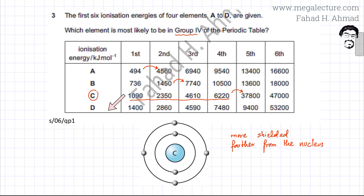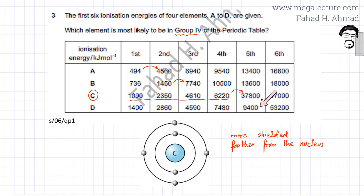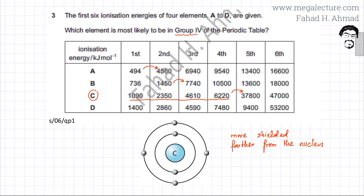We can check D as well. For element D, removing the first, second, third, fourth, and fifth electrons shows only a gradual increase in ionization energy, meaning the outermost shell has five electrons. But as soon as you try to remove the sixth electron — which is from an inner shell closer to the nucleus — it becomes very difficult. So this element is in group 5 with five valence electrons. Therefore, the correct answer for the group 4 element is option C.